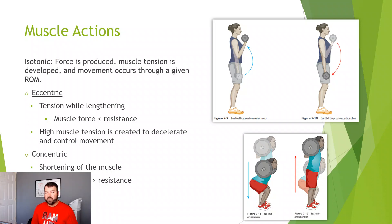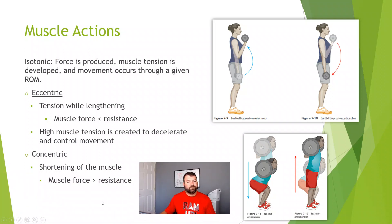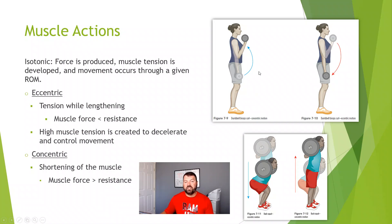Muscle actions — we're going to talk about isotonic muscle action, where muscle tension is developed and movement occurs through a given range of motion. The big common ones are eccentric and concentric. Eccentric is tension while the muscle is lengthening — muscle force is less than the resistance. Concentric is the muscle shortening — muscle force is greater than the resistance. For example, on bicep curls, the curling up is a concentric contraction, and the going downwards is an eccentric contraction. Same with a squat — going down is eccentric, going back up is concentric.